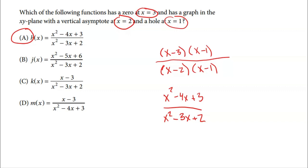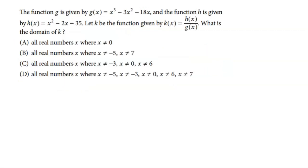If we factor the other choices B, C, and D, we'll find that some of the required conditions are violated. For example, a choice might have x minus 1 only in the denominator — that creates a vertical asymptote, not a hole. To create a hole at x equals 1, we need x minus 1 in both the numerator and denominator. I prefer to build the function from scratch using what I know, then find the matching choice.